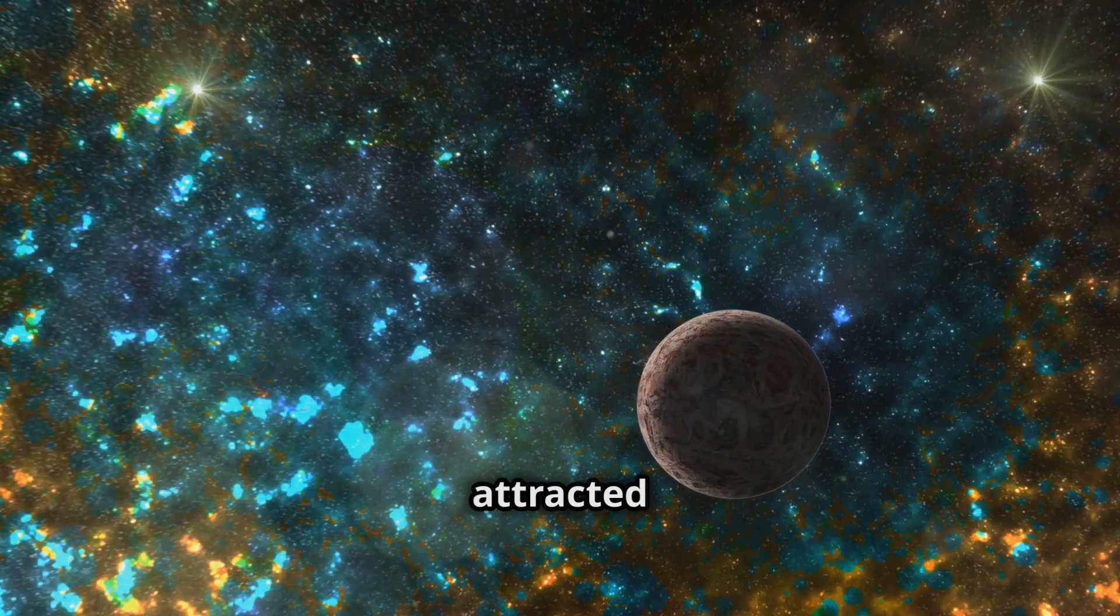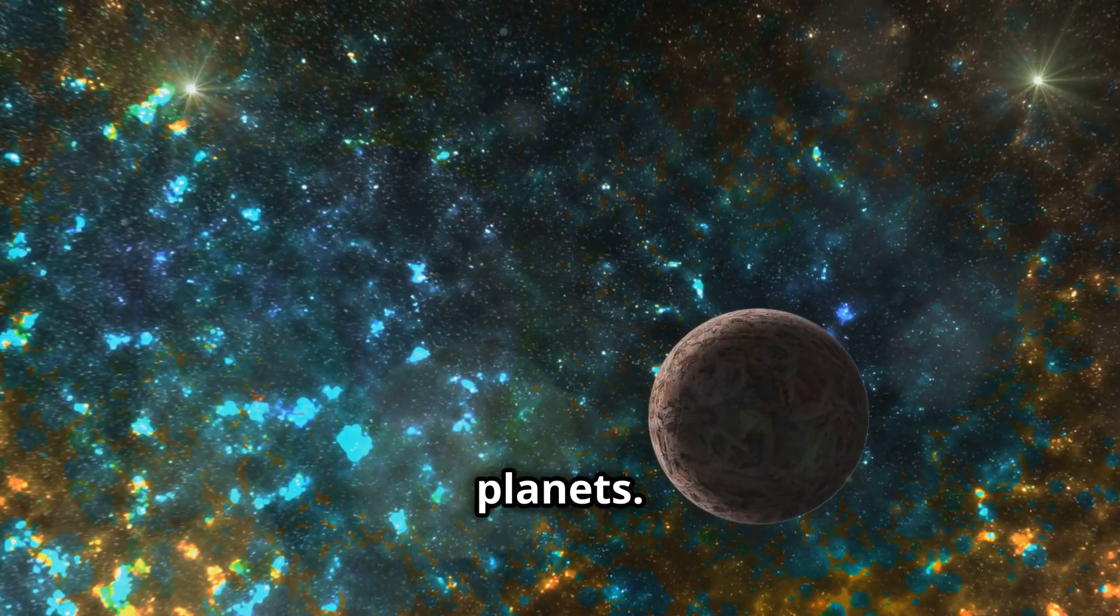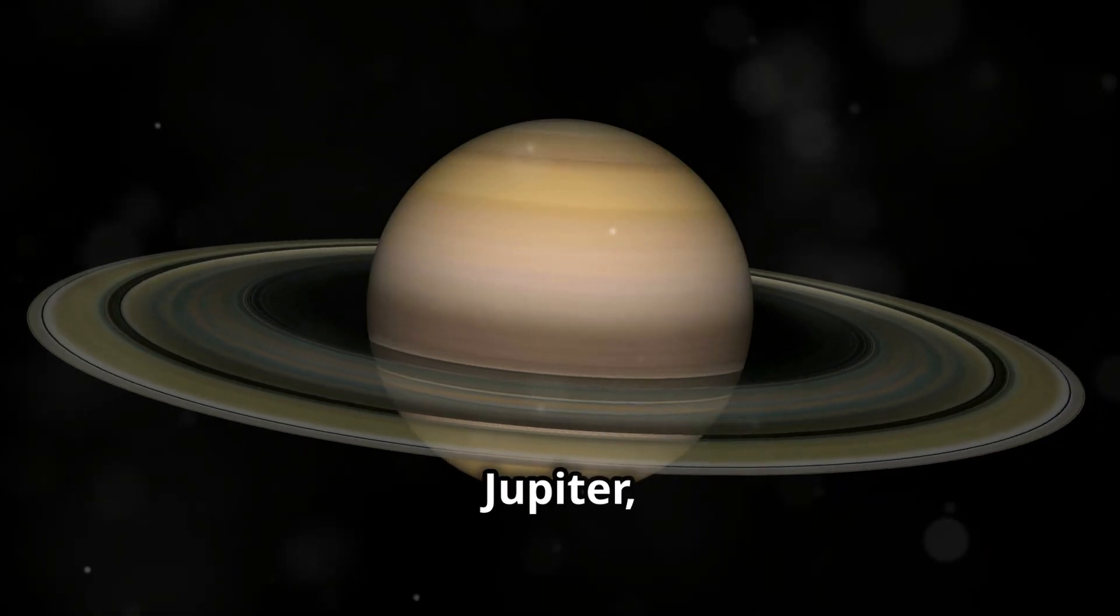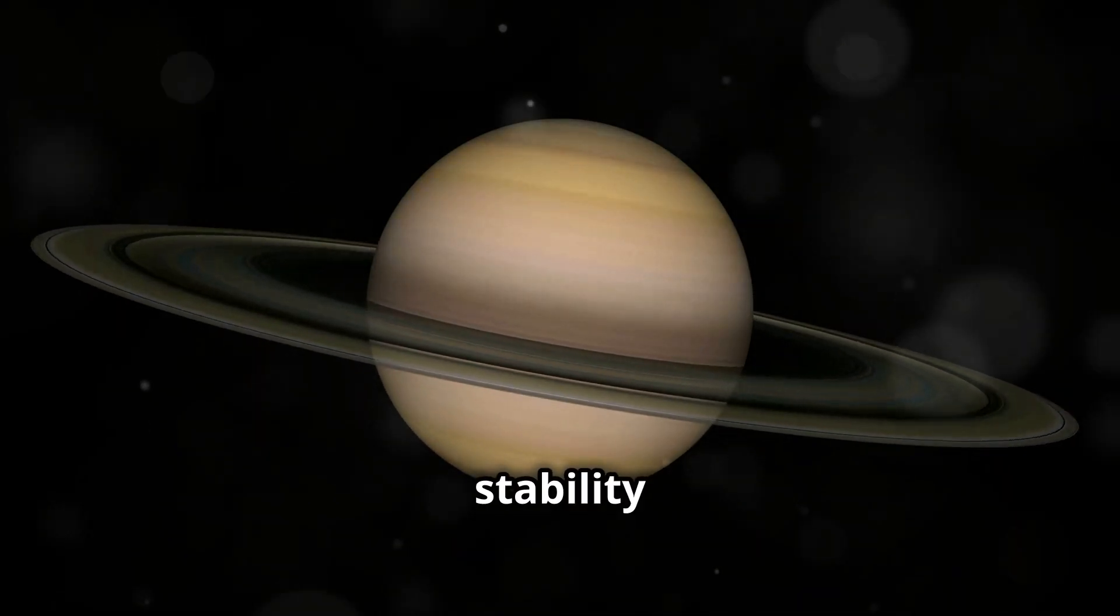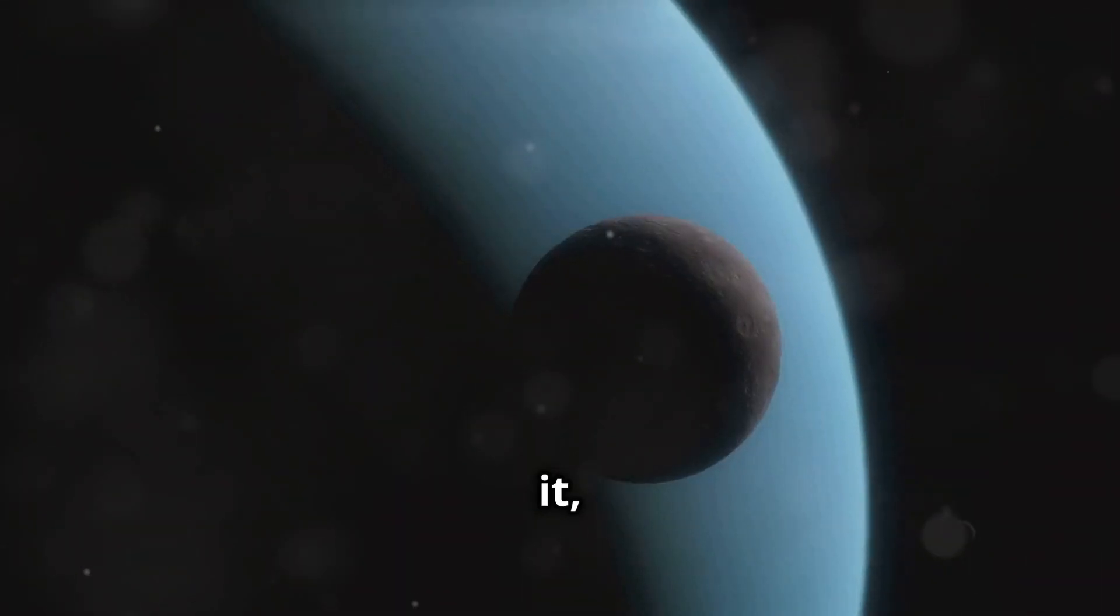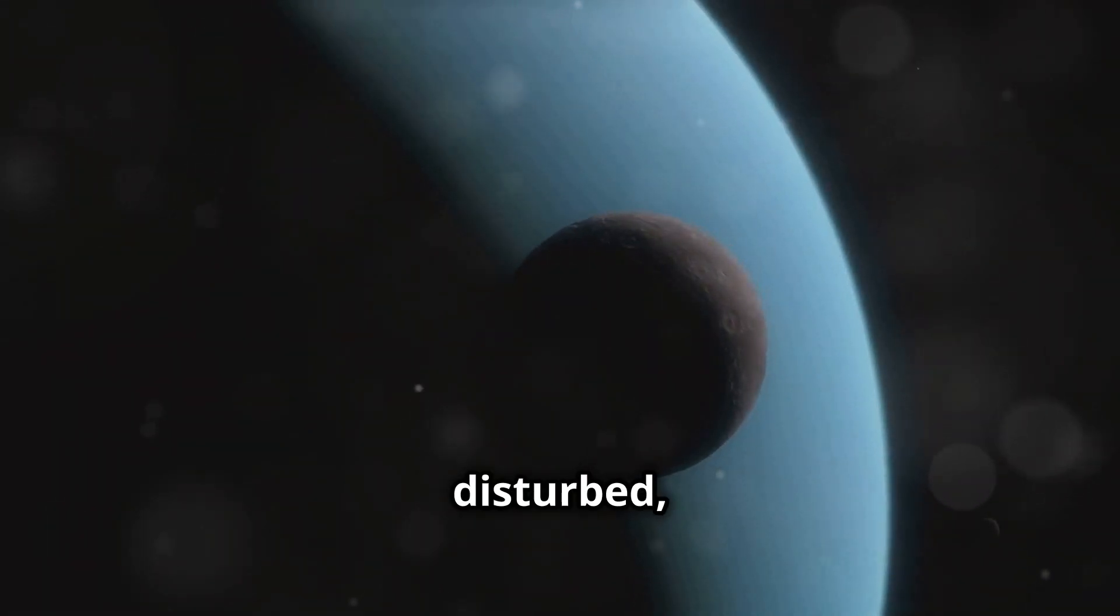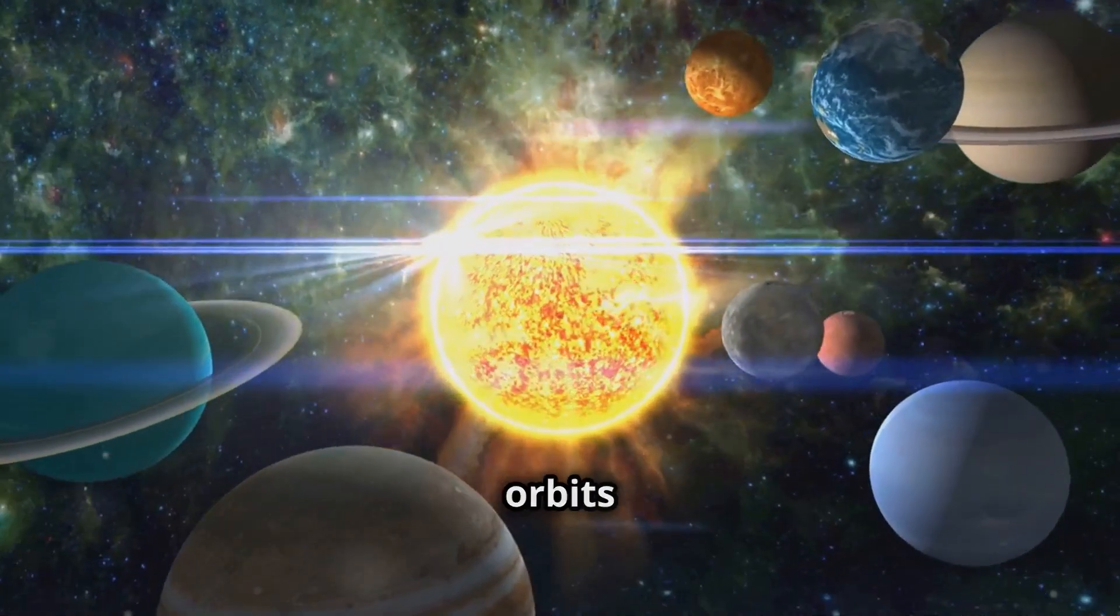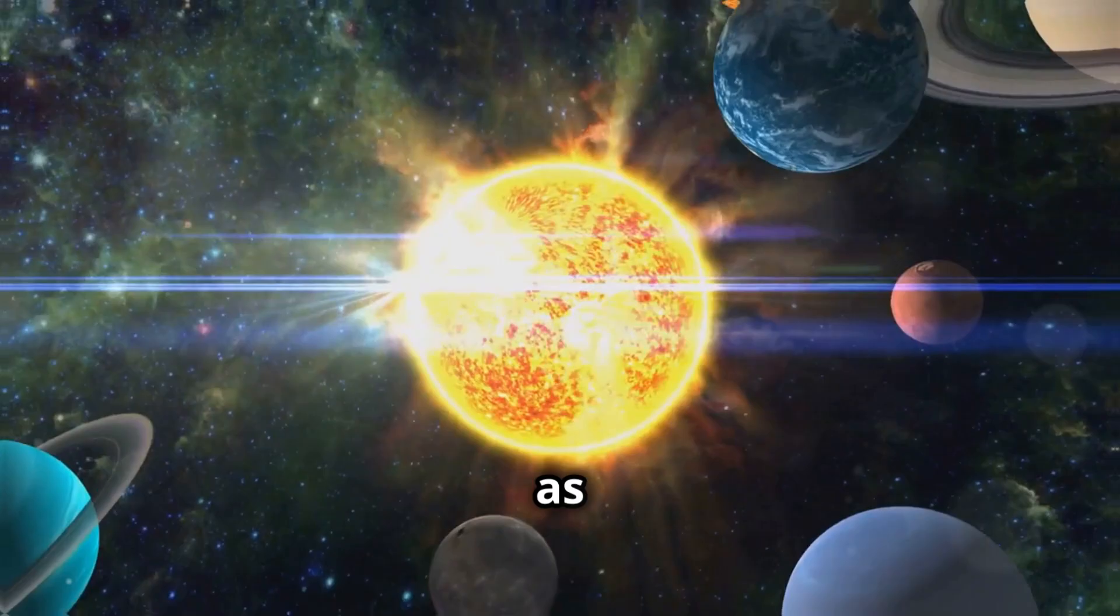Some of these particles would be attracted by the gravity of the other planets. Saturn, like Jupiter, is fundamental to the stability of our system. Without it, the orbits of Uranus and Neptune would be disturbed, which would end up destabilizing the orbits of the planets closest to the sun as well.